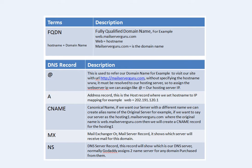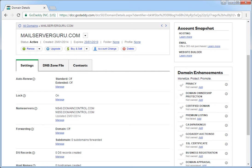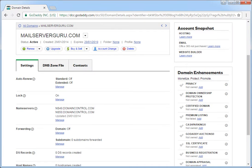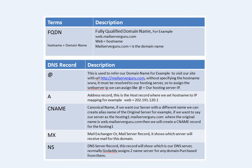Now let's discuss the main DNS record types we must implement to make our site and email operational. The '@' symbol is used to refer to our domain name. For example, to visit our site with URL http://mailserverguru.com without specifying the hostname 'www', it must resolve to our hosting server IP. We assign it like: @ equals our hosting server IP. This is called the A record — the address record — where we set hostname-to-IP mapping, for example web equals the IP, or mail equals the IP.